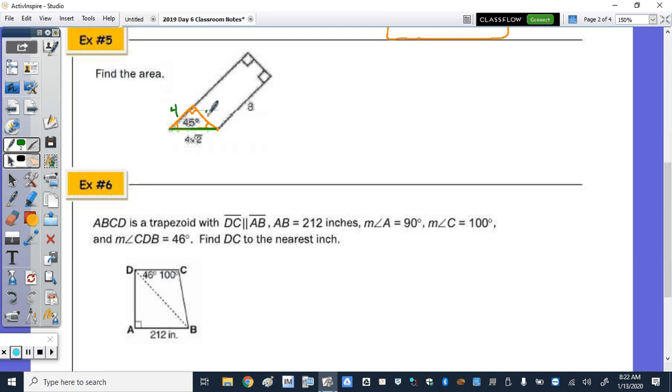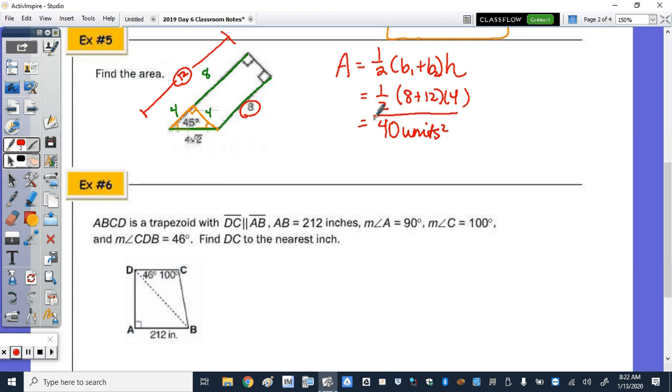then each leg is 4. And then I know that if this segment is 8, this segment is also going to be 8. So I have bases of 8 and 12. And the area formula is one-half sum of the bases times the height. So it's going to be one-half of 8 plus 12 times 4. So one-half of 20 is 10. And then 10 times 4 is 40 units squared.